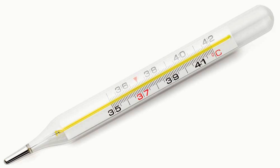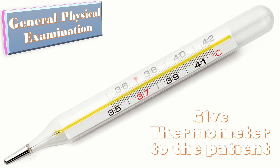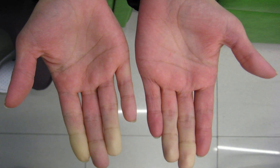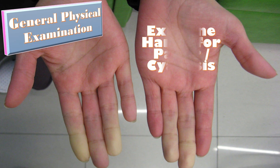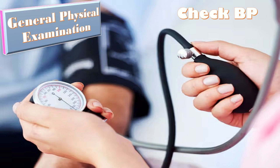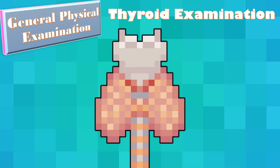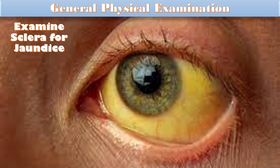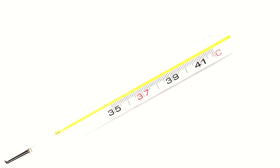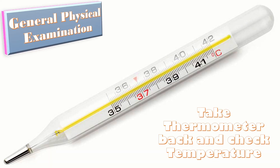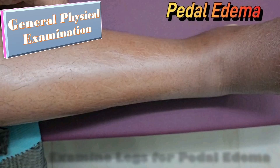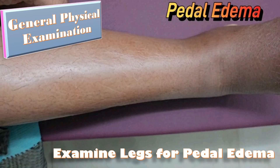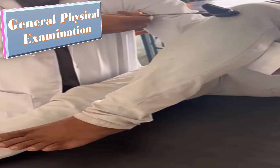Before starting examination, give a thermometer to the patient and ask her to place it under her arm. Examine the hands for pallor and cyanosis, check the pulse and blood pressure appropriately, examine the neck for thyroid, examine the conjunctiva for pallor, and the sclera for jaundice. Take the thermometer back, record the temperature, and examine the legs for pedal edema.